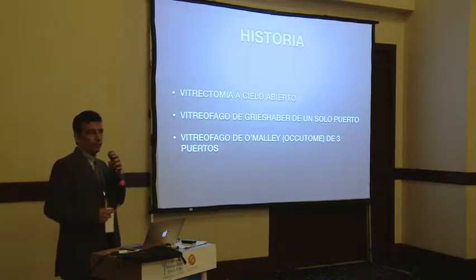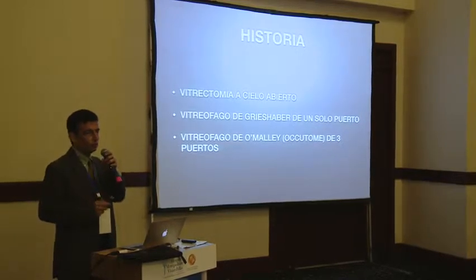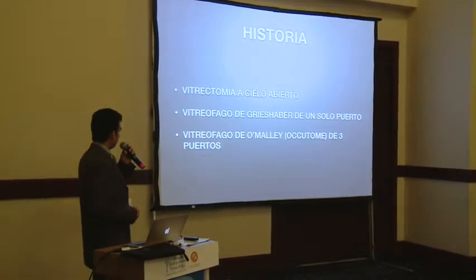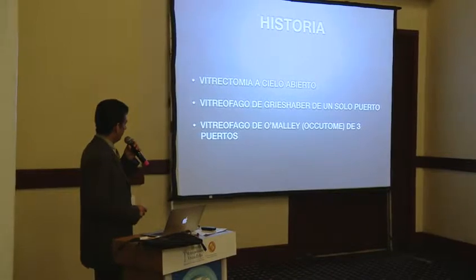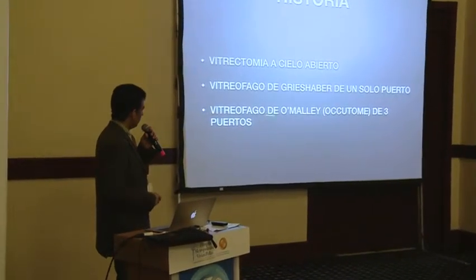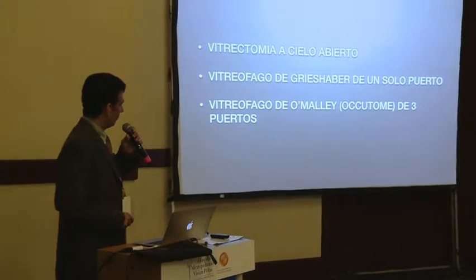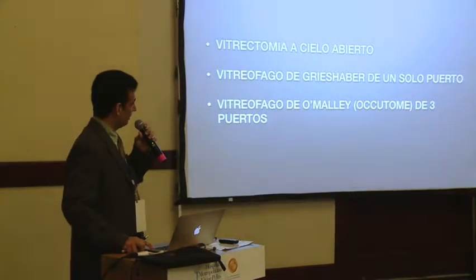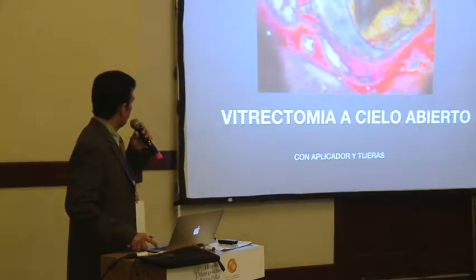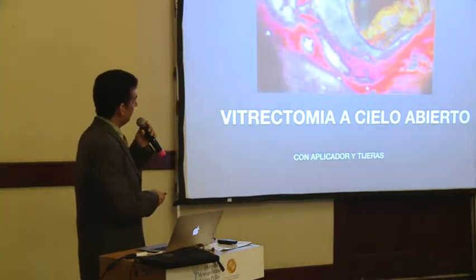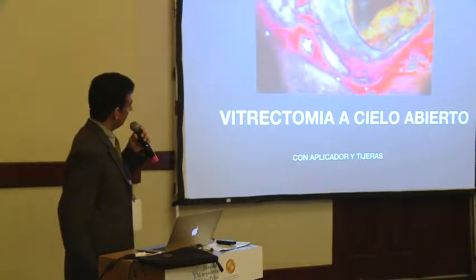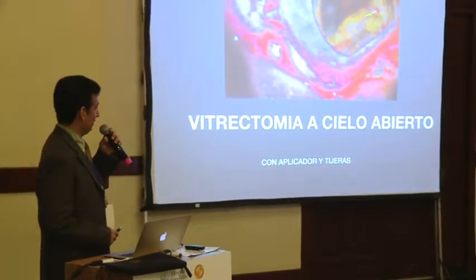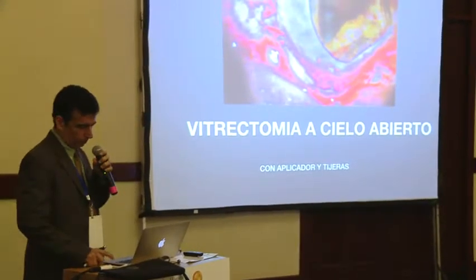La historia de la vitrectomía: antes de los años 1970 se hacía la vitrectomía a cielo abierto. Posteriormente, en 1970 y pico, alrededor del 75, apareció el vitrófago de Grieshaber de un solo puerto, y posteriormente en los 80 el vitrófago de Omali de tres puertos, que es la técnica que sigue estando hasta ahora. Esto es lo que se llamaba vitrectomía a cielo abierto: abrir la córnea y con tijera y aplicadores cortar el vítreo. Por supuesto que ya no se hace.